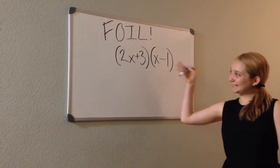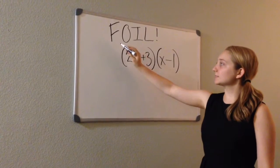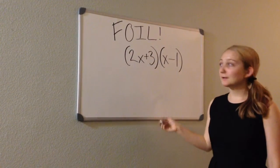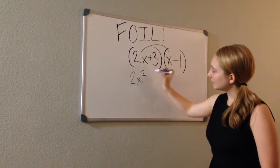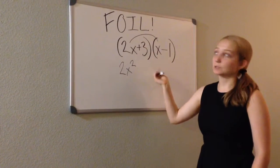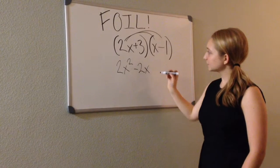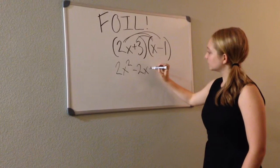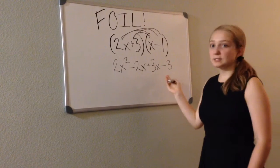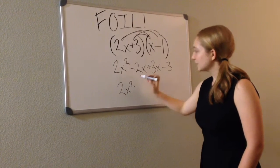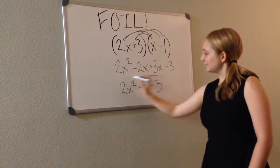Now let's talk about FOILing. When you FOIL, you distribute each term to every other term. FOIL is an acronym that stands for first, outer, inner, and last. Starting with the first terms: 2X times X is 2X squared, because X times X is X squared. Our outer terms are 2X and negative 1, so 2X times negative 1 is negative 2X. Our inner terms are 3 and X, so plus 3X. Our last terms are 3 and negative 1, so minus 3. Combining like terms: 2X squared, then negative 2X plus 3X gives plus X, minus 3. That is the answer.